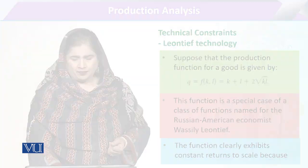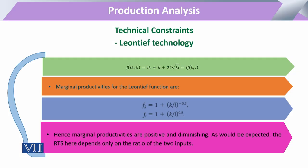When we utilize the same production function and explain the marginal productivities by taking the derivative, the marginal productivity with respect to capital comes equal to 1 + (k/l)^-0.5.